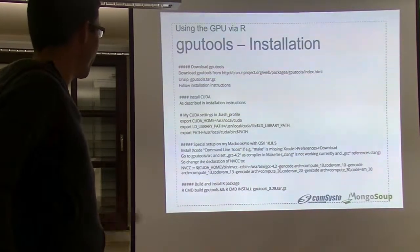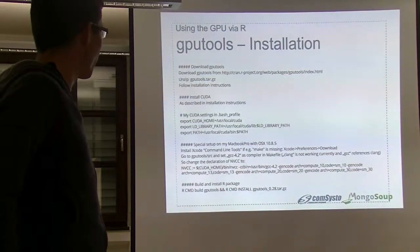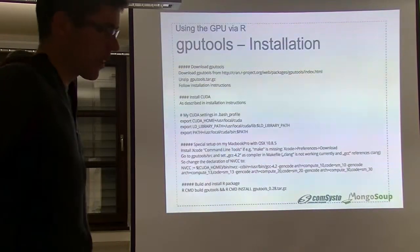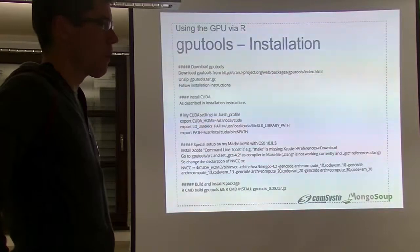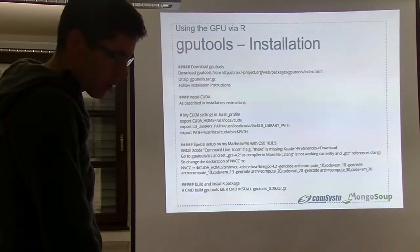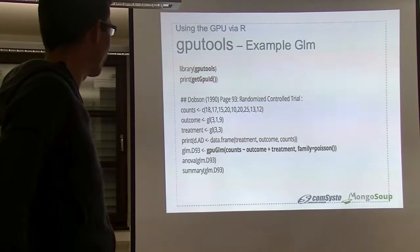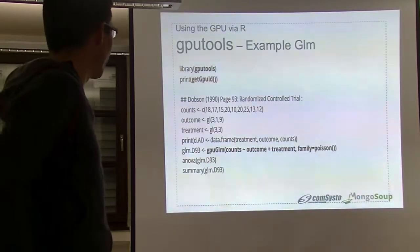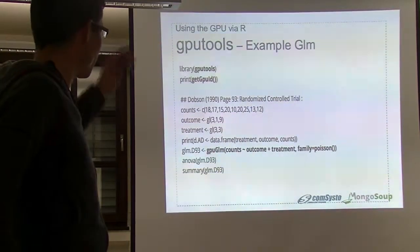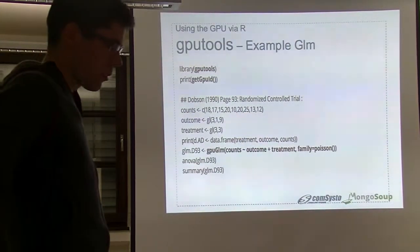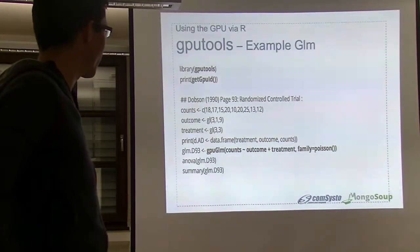There is a description on the R package page, but it didn't work on my MacBook, so I had to make some changes in my make file. I've included the steps in the slides for later, if you want to get it running. It was not easy, but after all, I did it. This was the first R script I ran — you can print the GPU ID, which is the ID of your graphics card.